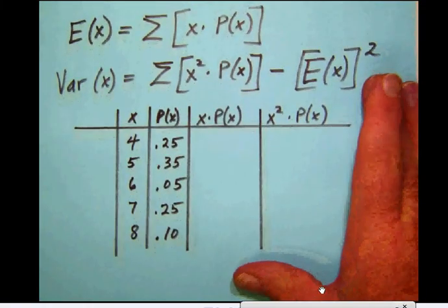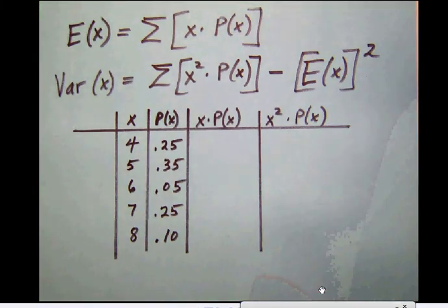Notice that our formula up here for the mean or the expectation value that we talked about is given to us with this formula involving a summation, the summation of X times the probability of X. That means we're going to simply add up all of the X times probability of X, and the way we're going to do that is to create a column called X times probability of X, and what we're going to put in that is this number here, the X times its probability.